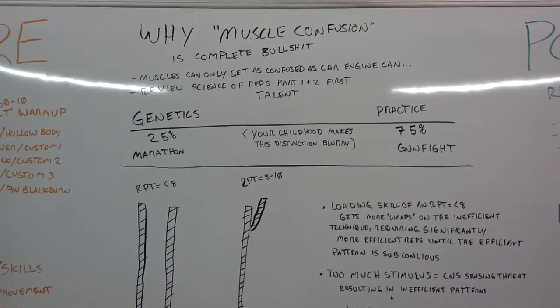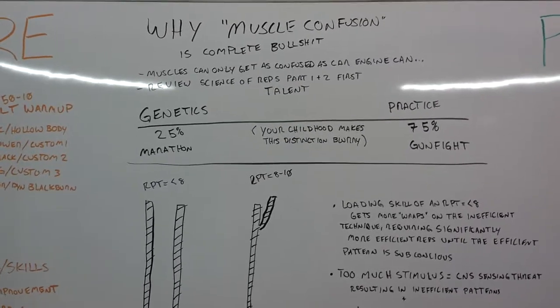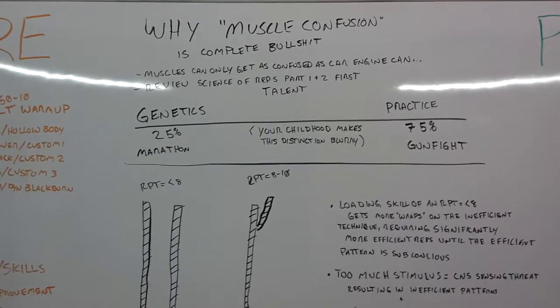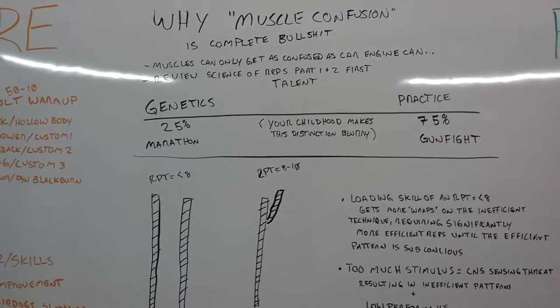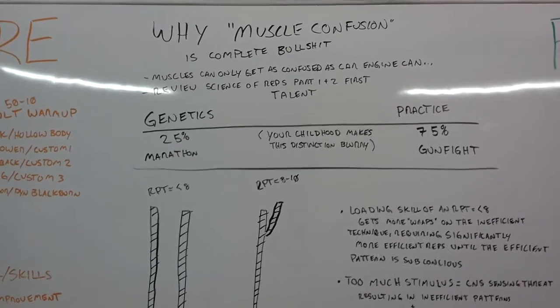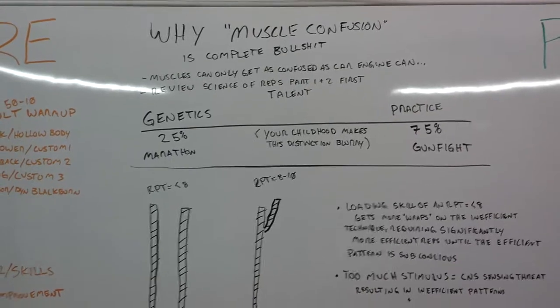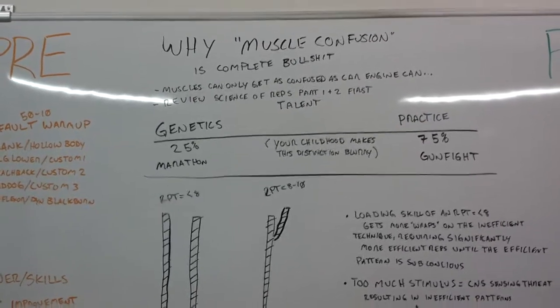First thing, muscles can only be as confused as a car engine can. They know contract and they know relaxation. That is it. Just like a car engine, a piston would know up and down. That's all it knows. It has no brain to think. It cannot be confused. All it can do is one function.